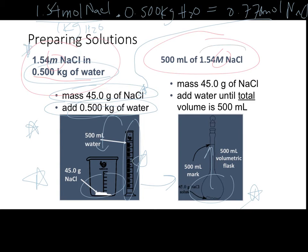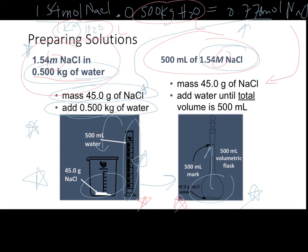If we look at the molar solution — 1.54 molar — figuring out how many moles of NaCl you need involves the same calculation, except instead of dealing with kilograms, we'd be dealing with liters. That gives the same quantity of moles and grams of sodium chloride. Typically when we're dealing with volumetric flasks, we're dealing with whole number multiples, usually of 10 or 100 — you're not going to find a 23 milliliter volumetric flask. In that case, use the graduated cylinder approach.